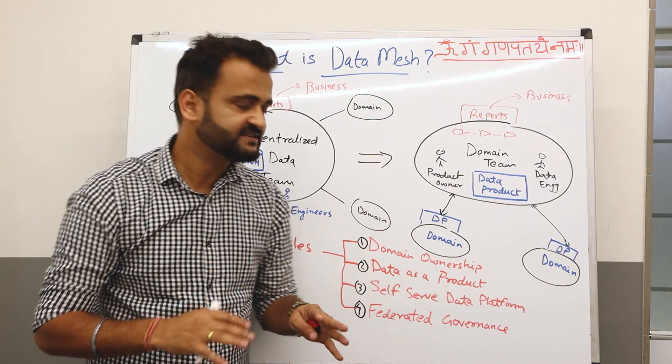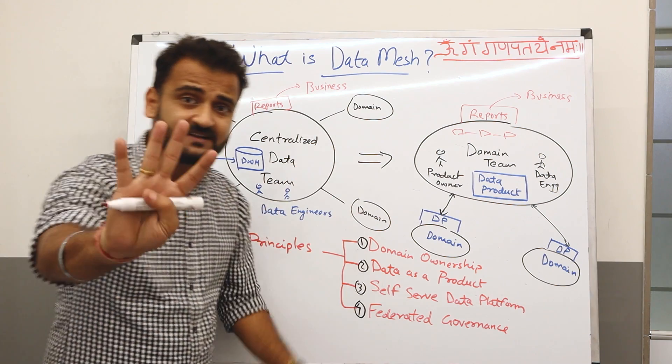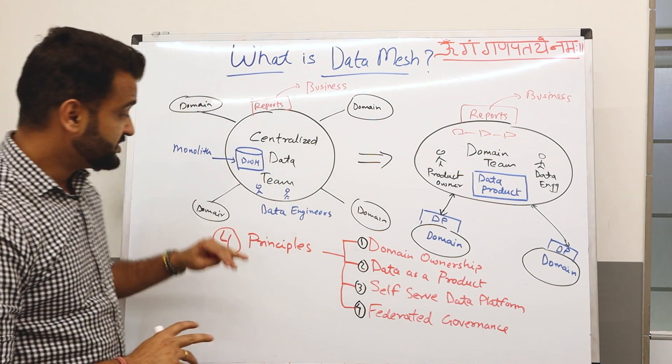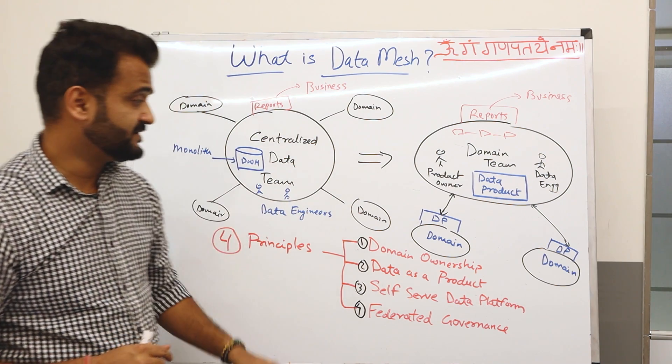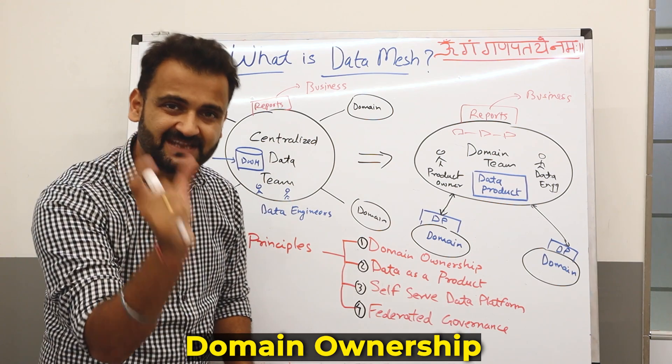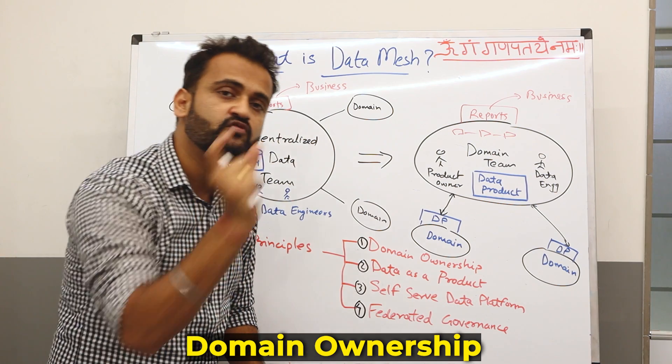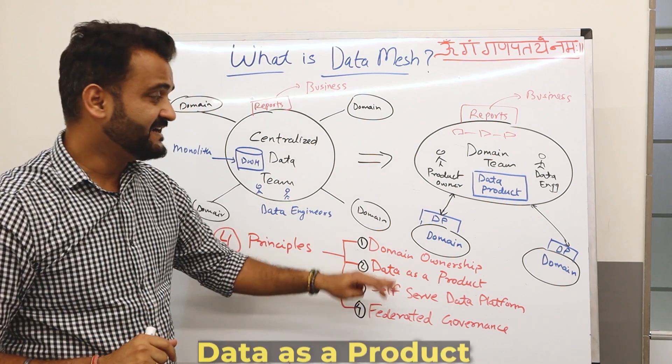And then there would be an infrastructure team supporting you, which we'll understand during our detailed architecture discussion. But let's understand the four principles. Number one, we have talked about multiple times, domain ownership. That's the key. Everything has to move back to the domains.